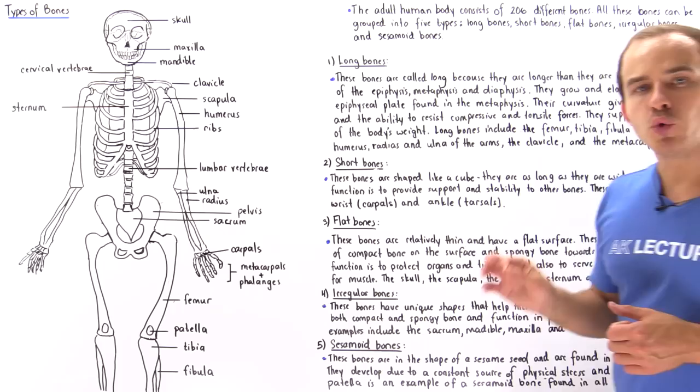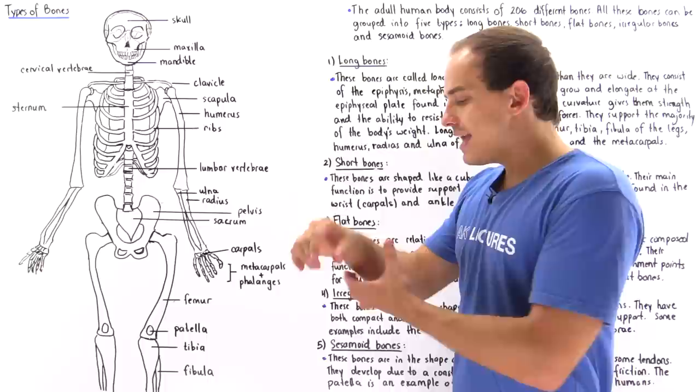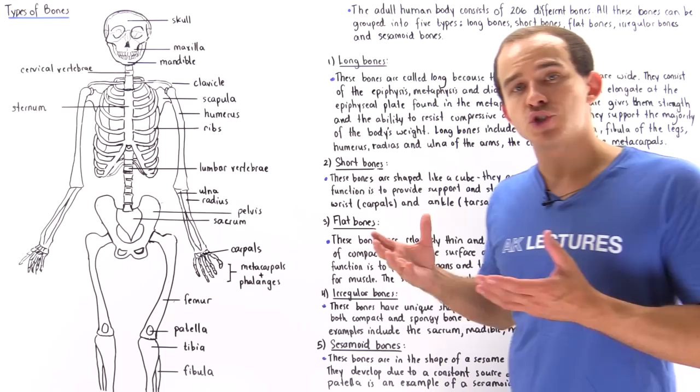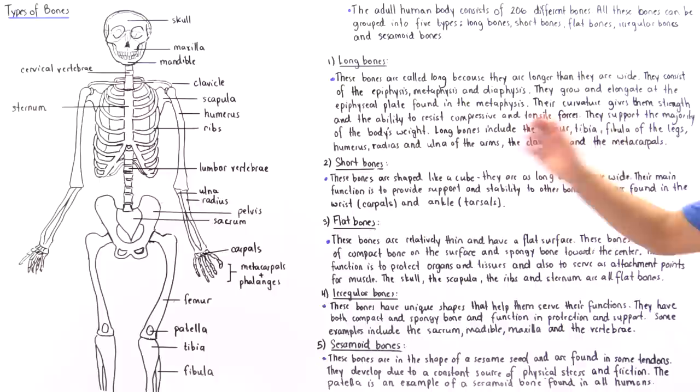Examples of short bones include the carpals found in the wrist, and the tarsals found in the ankles, which are also examples of short bones.